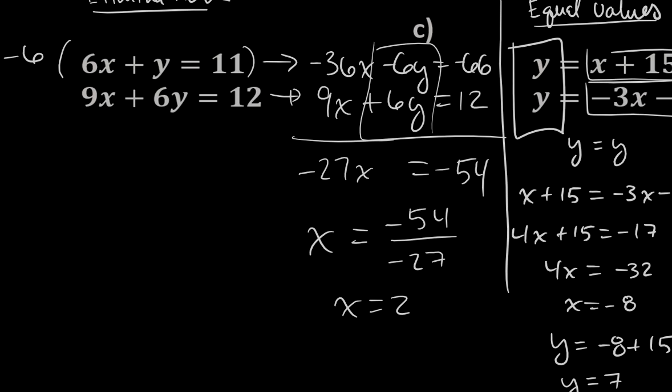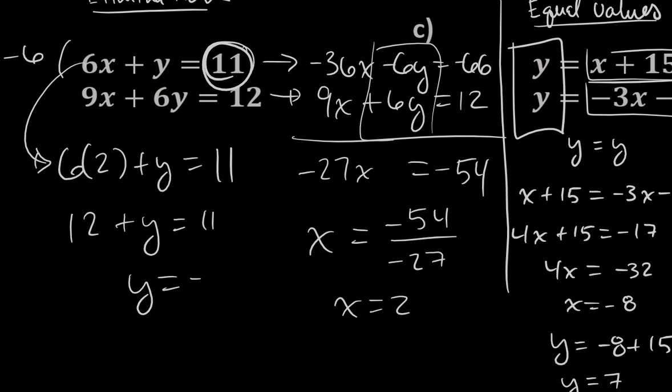And then to figure out what y is, I guess I'll just use this top equation. I don't see any harm in that. So this just says, hey, 6 times the 2, right, the value we just found, plus y is 12—no, no, no, no, don't do that. It's 11. I'm copying the first equation. That's how mistakes are made. So 6 times x plus y is 11. 12 plus y is 11. Therefore, y has to be negative 1.